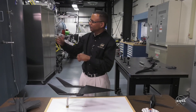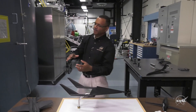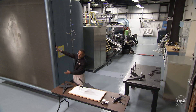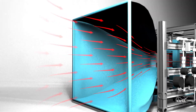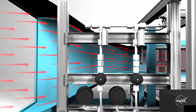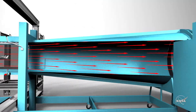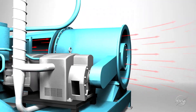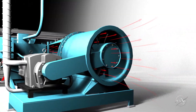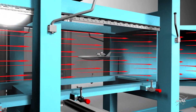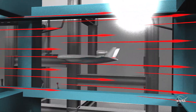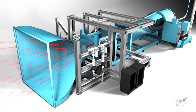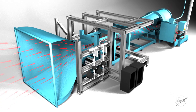So let's look at the wind tunnel. This is the entrance of the wind tunnel — this is where the air actually comes in. And the fan is actually downstream, pulling the air over the model, which is kind of interesting when you think about it. It's kind of like a vacuum cleaner.